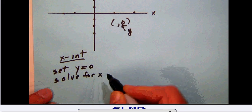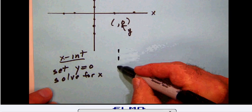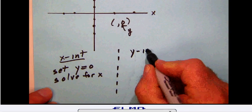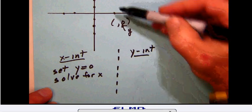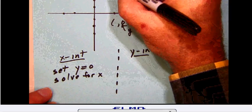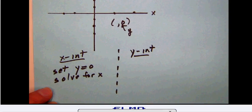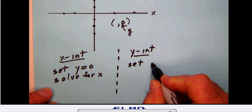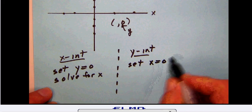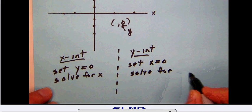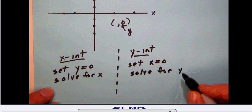If we want to, on the other hand, find the y-intercept, we will notice that any place on the y-axis the x-coordinate is equal to zero. So that tells us that we're going to set our x equal to zero and solve for y. This is going to become the method, the shortcut, for solving problems such as this one.